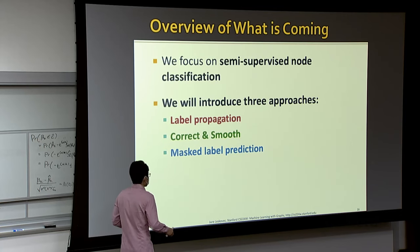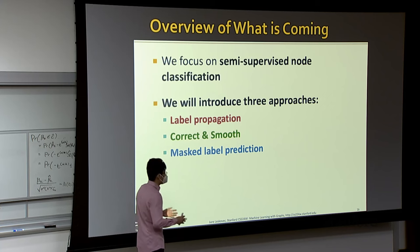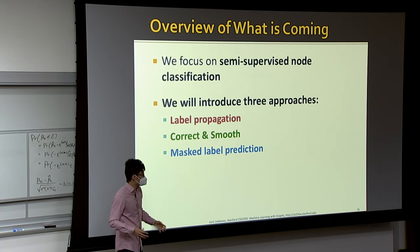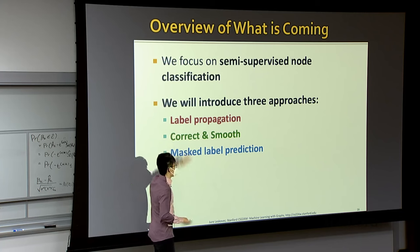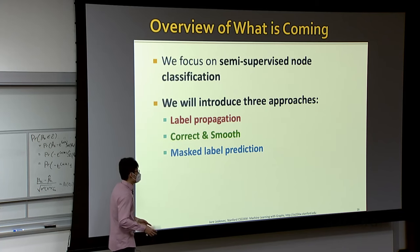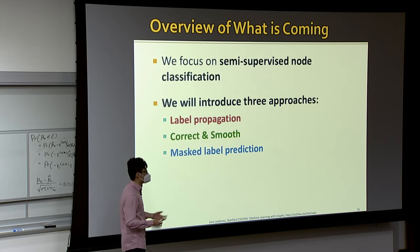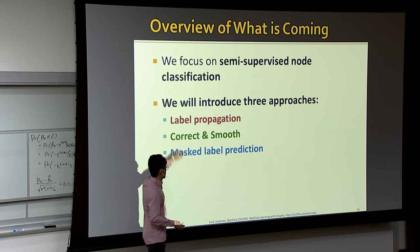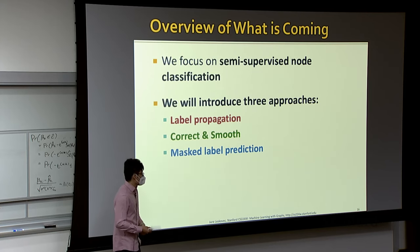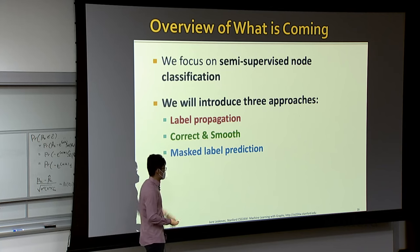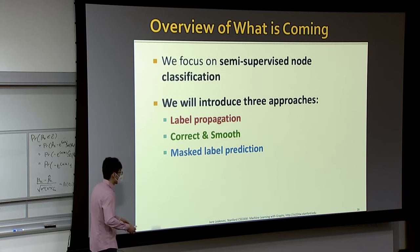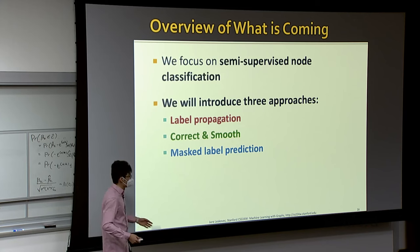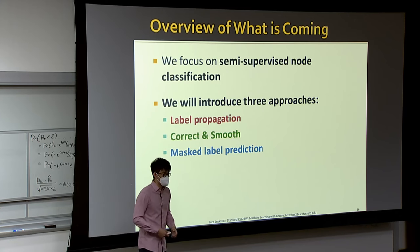We will address this problem through three approaches: first, the core idea of label propagation; then how label propagation can be combined with graph neural networks, leading to Correct and Smooth; and lastly, the practical and easy-to-implement approach called Masked Label Prediction.